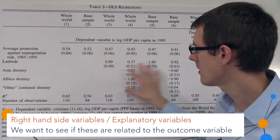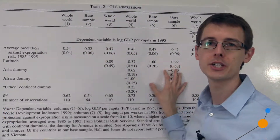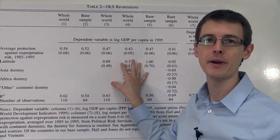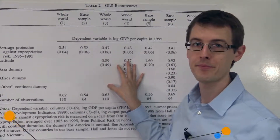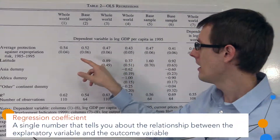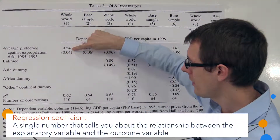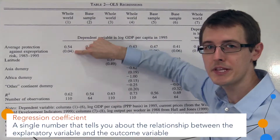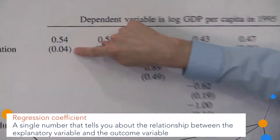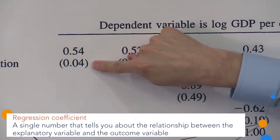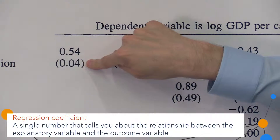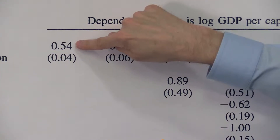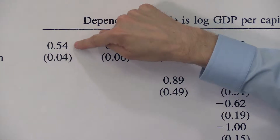These numbers here are called the regression coefficients — this is what we're estimating from our data. The numbers at the top are the coefficients, and below them are the standard errors, which are a measure of the uncertainty in this point estimate.